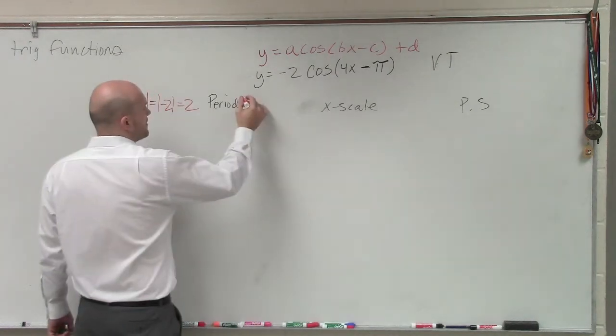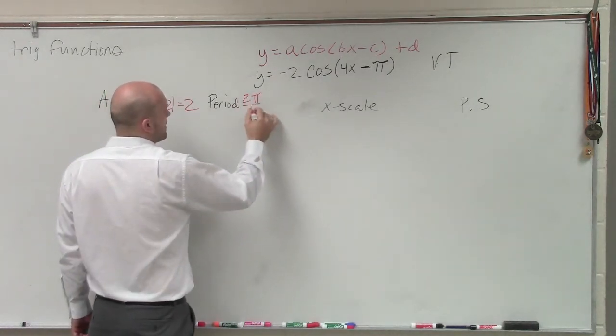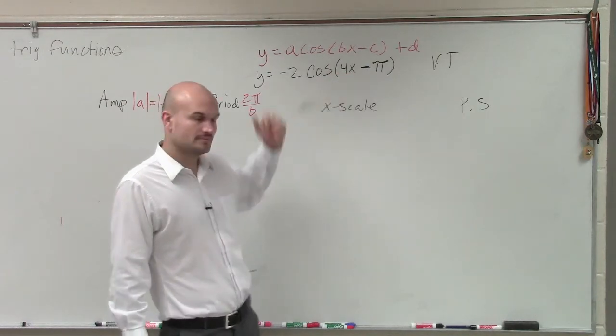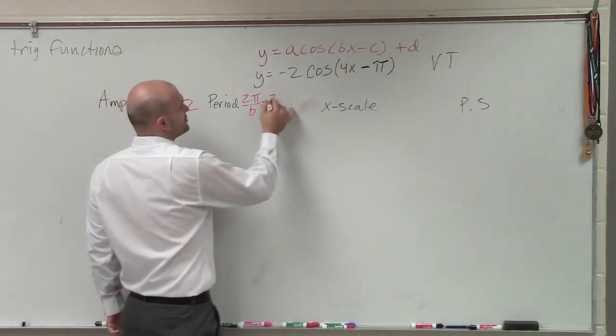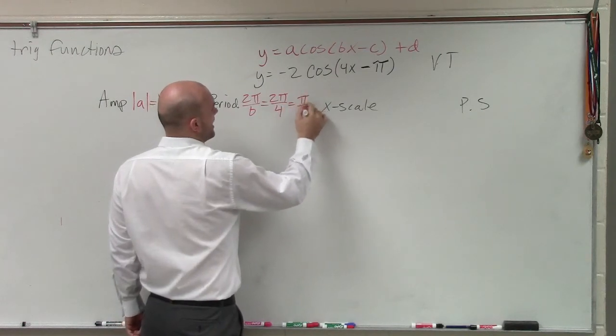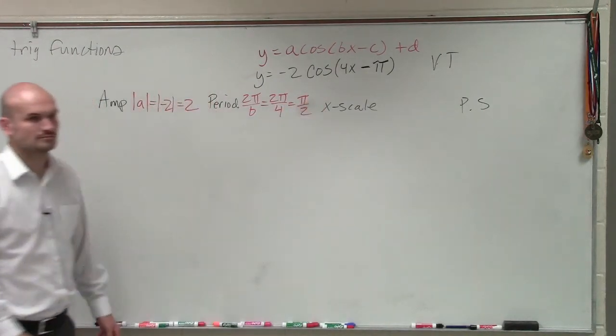So, period, remember, period is 2π divided by b. Well, in this case, our b is a 4. So therefore, I do 2π divided by 4, which equals π halves.